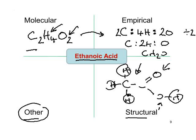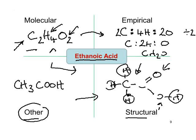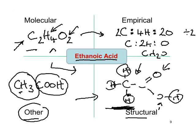There is also a formula that is essentially halfway between the molecular and the structural formula, written as CH₃COOH. It goes a little further than the molecular formula but doesn't go quite as far as the structural formula. It does indicate that this carbon has three hydrogens attached to it, and that we have a C, two O's and an H — but it doesn't show the exact manner in which they are joined together.